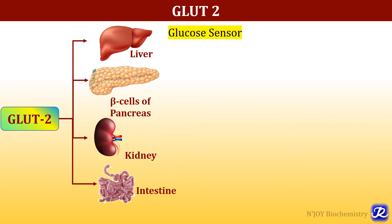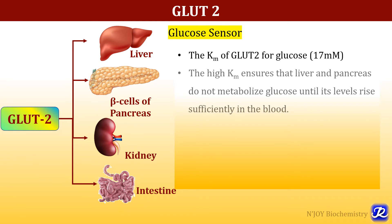GLUT 2 transporters are located in the liver, beta cells of pancreas, kidney, and intestine. They are called glucose sensors, as they are present in the beta cells of pancreas and are responsible for insulin secretion when glucose level is high. GLUT 2 has a high KM for glucose, which ensures that liver and pancreas do not metabolize glucose until its level rises sufficiently high in the blood. At low glucose levels, both liver and pancreas cannot take up glucose because GLUT 2 has high KM and low affinity.